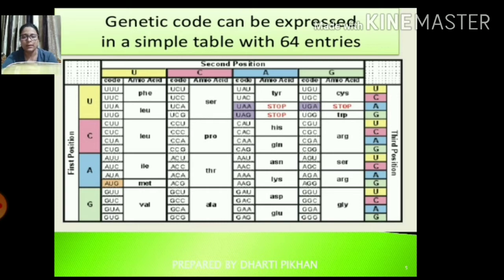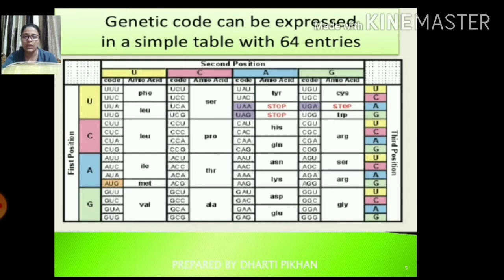There are 64 entries in the genetic code table. The table has a 1st position, a 2nd position on the top, and a 3rd position. For example, in the 1st position we have U, in the 2nd position U, giving UUU; and with C in the 2nd position, we get UUC. So all 64 codes are different for different amino acids, giving us a complete table of 64 genetic code entries.